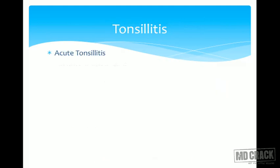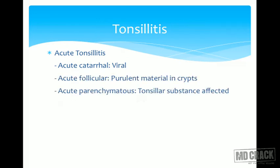Tonsillitis is the inflammation of tonsillar tissue. Acute tonsillitis is divided into four types: acute catarrhal or viral, in which not only the tonsils but also the pharynx and larynx are involved (tonsillopharyngitis). In acute follicular tonsillitis, purulent material accumulates in the crypts.